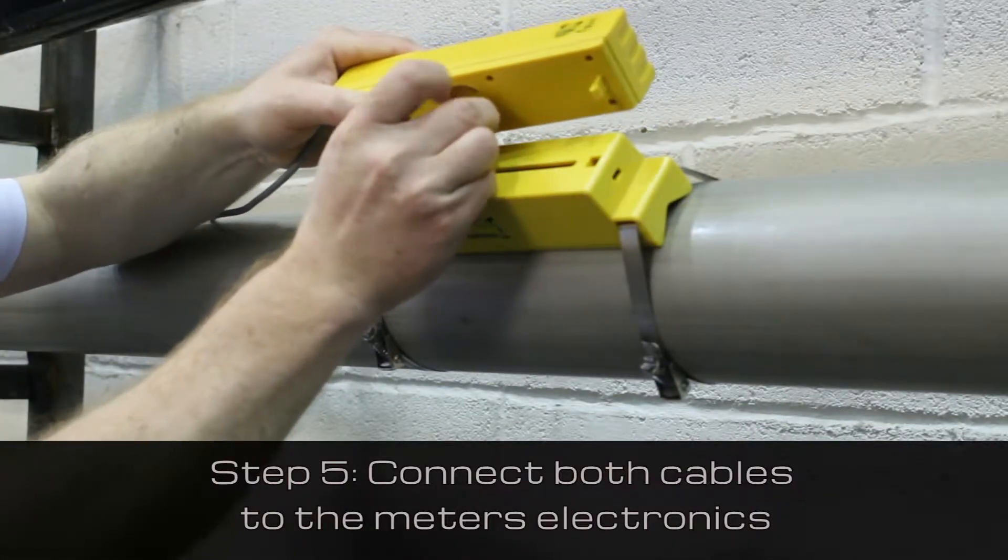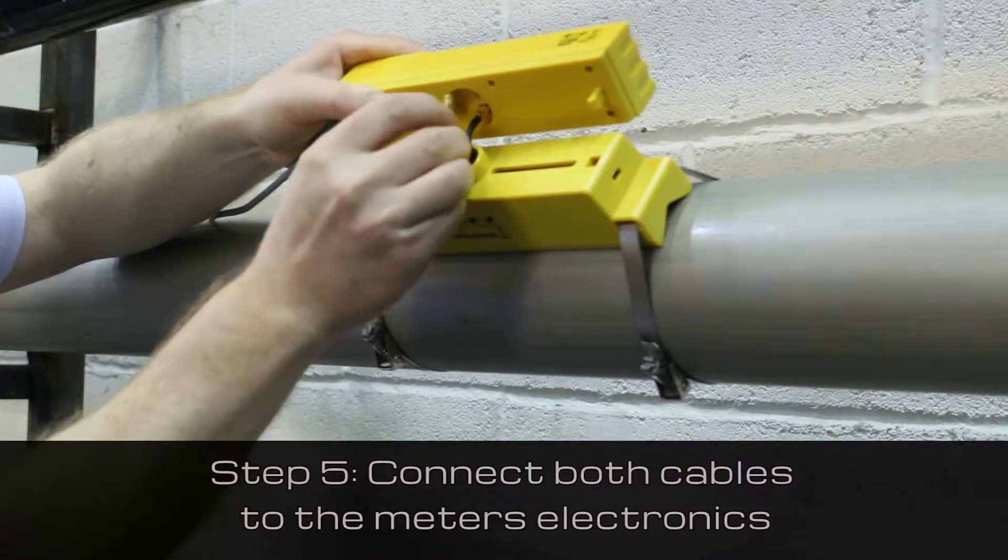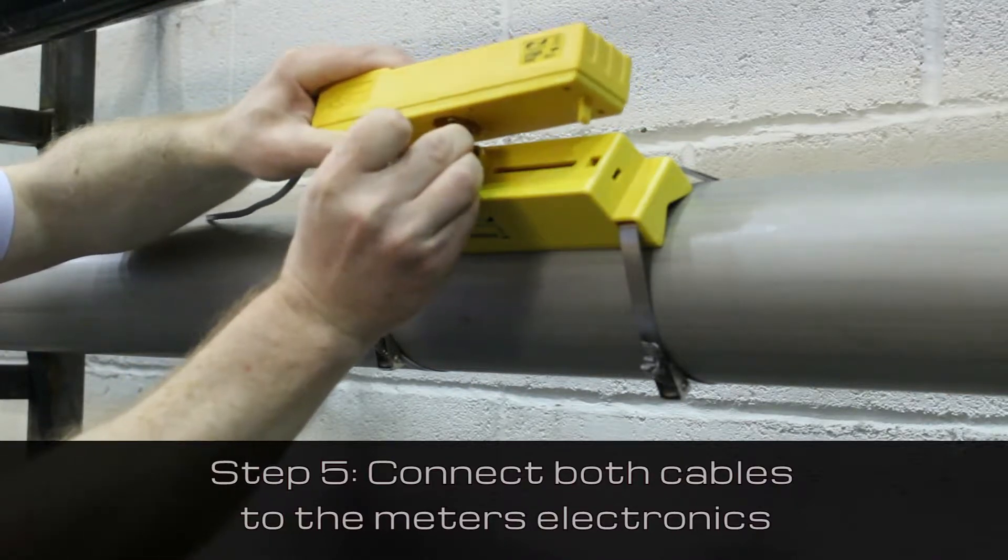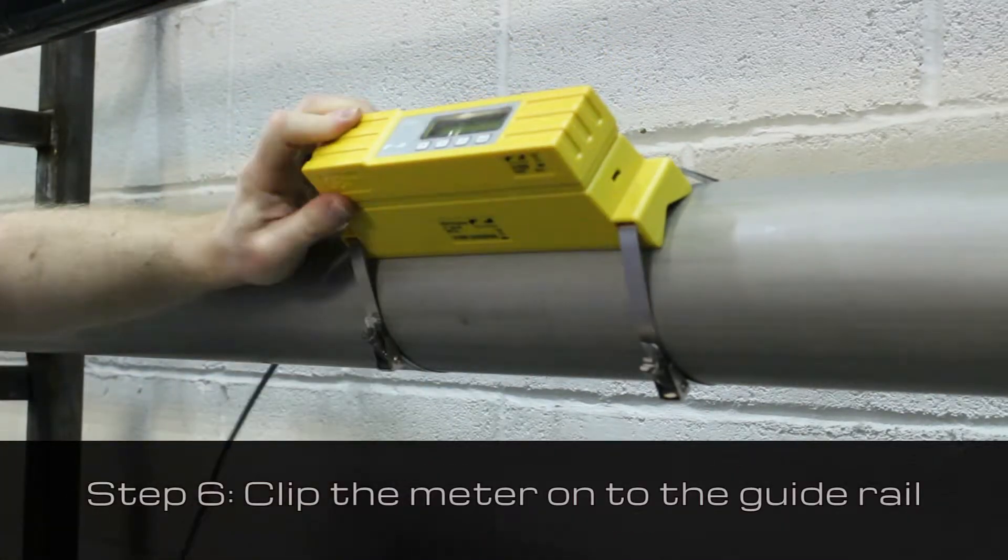Connect both cables to the meter's electronics. The meter will simply then clip on to the guide rail.